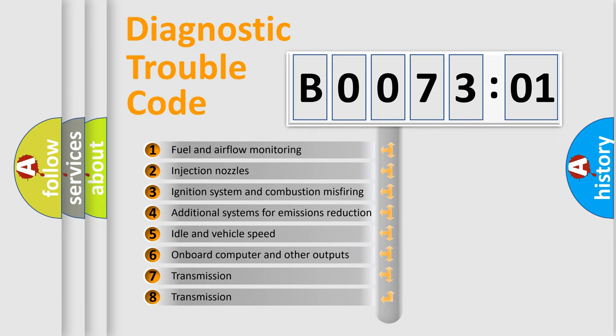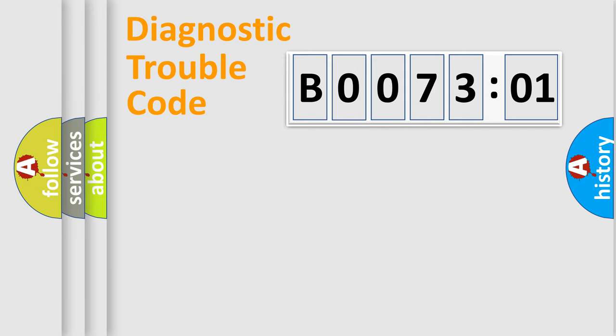The third character specifies a subset of errors. The distribution shown is valid only for the standardized DTC code. Only the last two characters define the specific fault of the group.